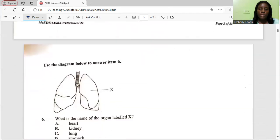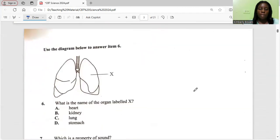Let's use the diagram below to answer item 6. This is also a repeated question and the answer is lungs. The organ labeled X is the lung.